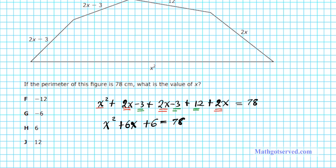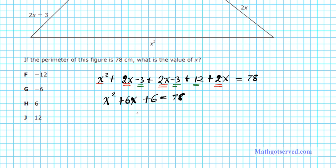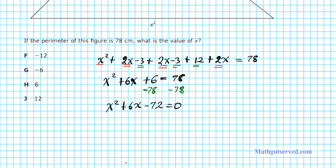Before solving the quadratic, we want to set it equal to 0 in standard form. We subtract 78 from both sides, which yields x squared plus 6x minus 72 equals 0. Now let's solve this by factoring. We're going to use the X-game method: AC goes on top — AC is negative 72 in this case — and B goes on the bottom, which is 6.